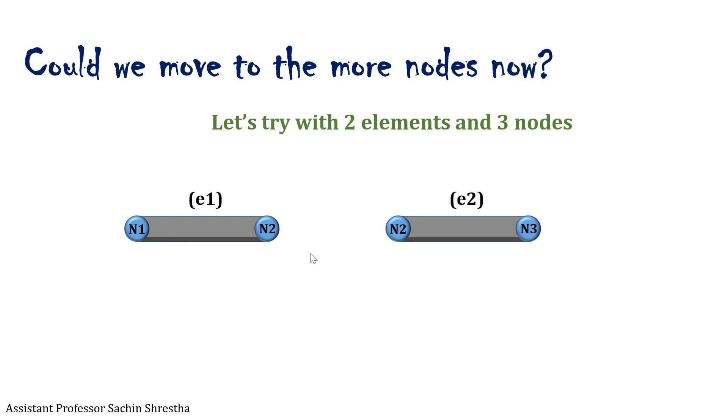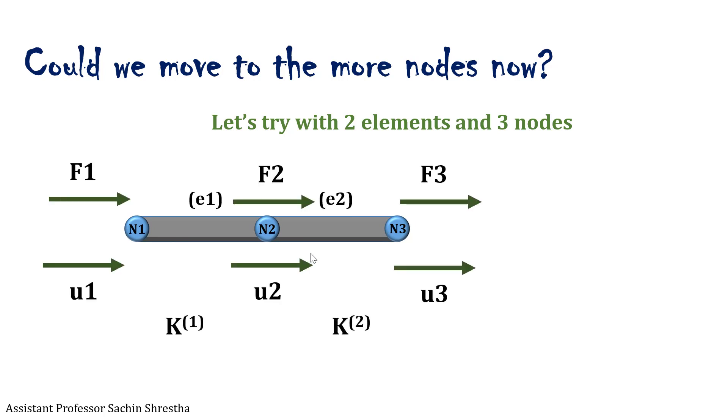Here, F1, F2, F3 are the force vectors; U1, U2, U3 are the displacement vectors; and the stiffness associated with each element is K1 and K2.